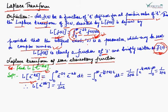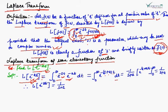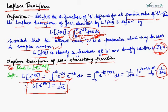हमारा definition क्या होता है? अगर F(t) का Laplace transform निकालना हो, तो यह बराबर होता है integral from 0 to infinity of e^(-st) F(t) dt. So we apply this formula: 0 to infinity e^(-st), and in place of F(t) we substitute e^(-at), giving e^(-(s+a)t) dt. After integrating and applying the limits, the value comes out to be 1/(s+a). Therefore, Laplace transform of e^(-at) = 1/(s+a).